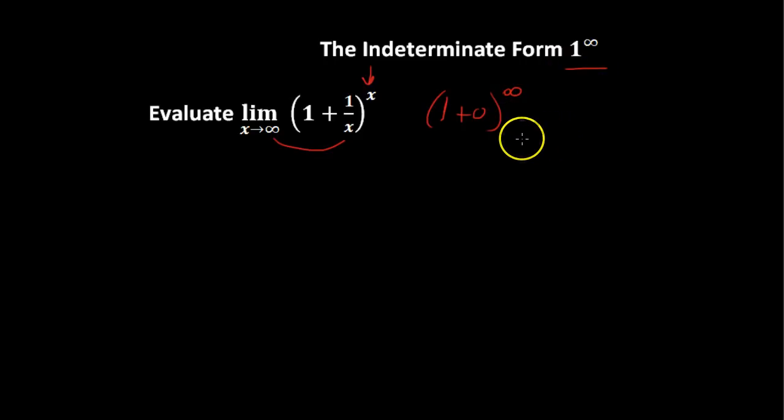Well, what we can do with something like this is to take the natural log of the limit. So let's set this up first. I'm going to say that L equals this limit that we were talking about. And then I will say that the natural log of L equals the natural log of the limit.